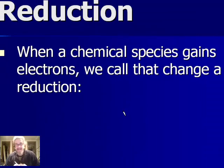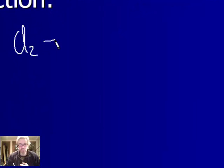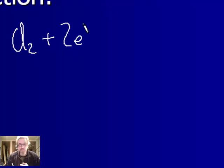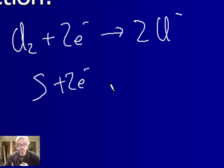When a chemical species gains electrons, we call that change a reduction. Here's an example, Cl2, chlorine. It can gain two electrons and make two chloride ions. That's a gain of electrons. Or another example, sulfur. Sulfur also gains two electrons, and now it becomes an S2-. Those are examples of reductions.